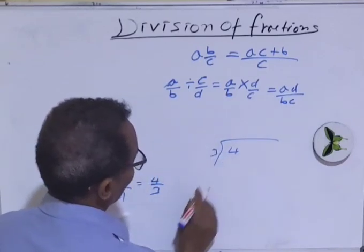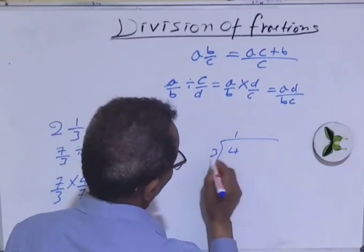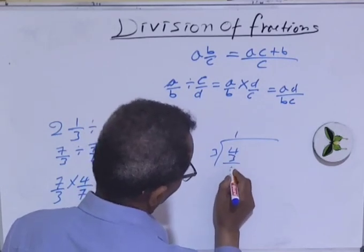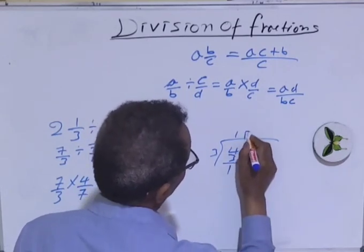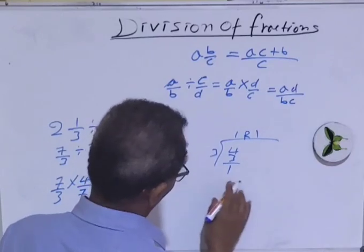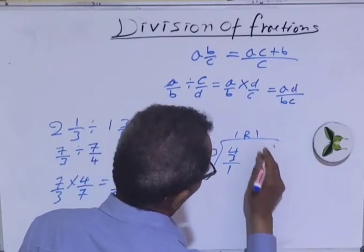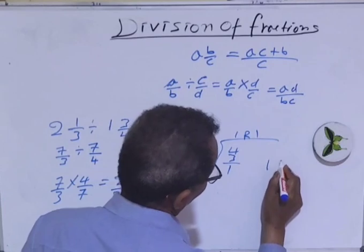Let's divide this one: 4 divided by 3. How many is this? 1. 1 times 3 is 3. So we've got here 1, and the remainder is 1. So we've got 1 and 1 yet divided by 3, 1 over 3.